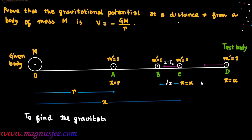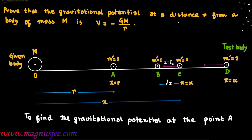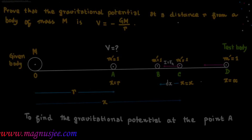To find the gravitational potential at point A, that means V equal question mark at point A.